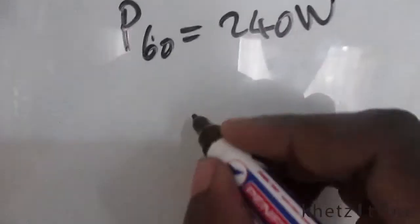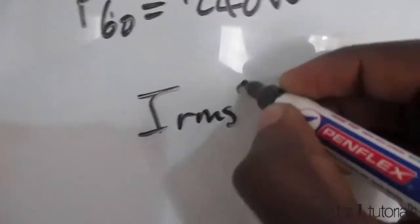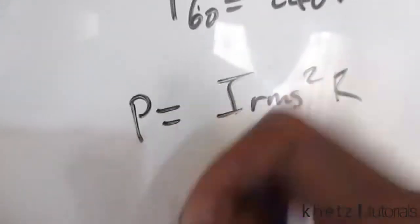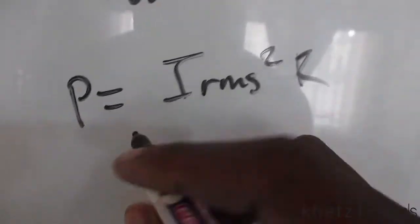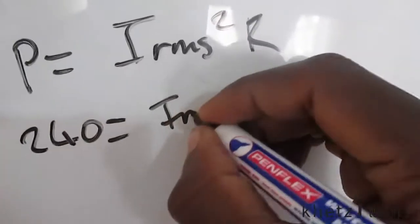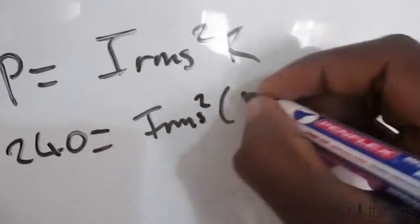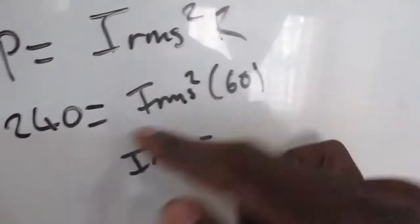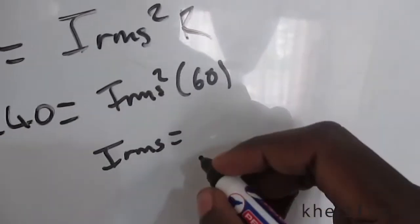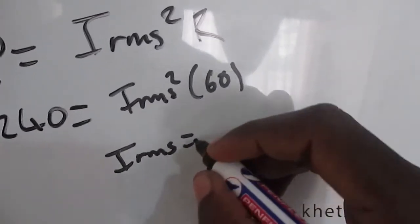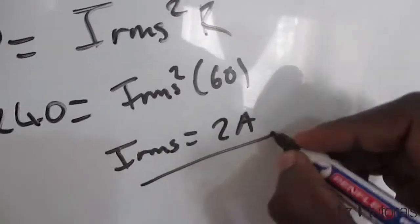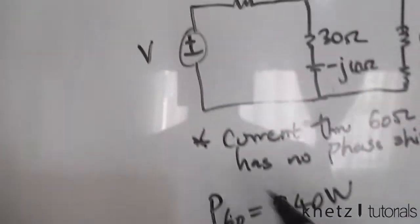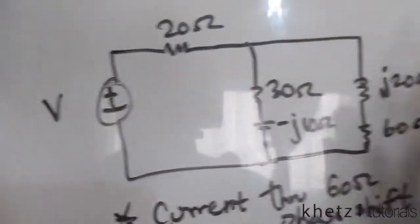For average power, using the formula with the given values: if the average power is 240 W, then I_RMS equals 240 divided by 60, which is 4, and the square root of 4 is 2. So the RMS current is 2 amperes. Now the question is asking us to find the value of this voltage source.